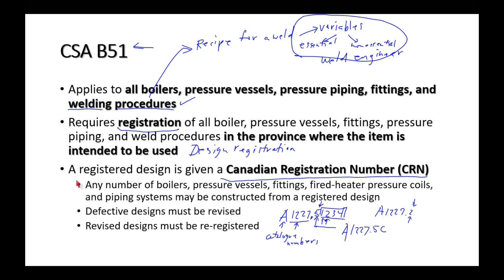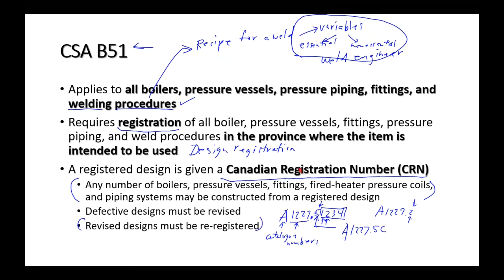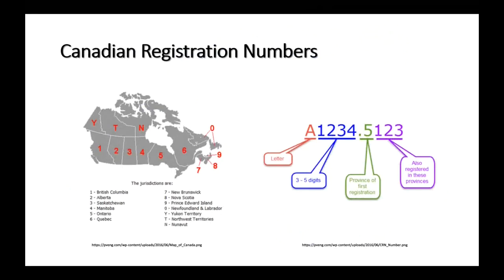Once you have a CRN, you can build any number of those boilers, pressure vessels, or fittings to that design — build a million a day if you want. You're registering the boiler design, not every individual boiler. If the manufacturer alters the design, that requires a new CRN. That's CSA B51 in a nutshell.